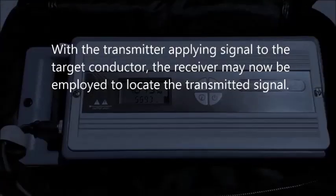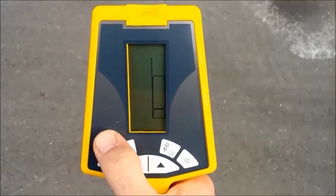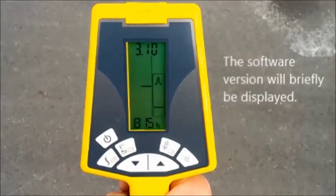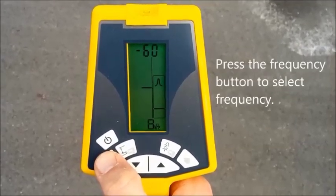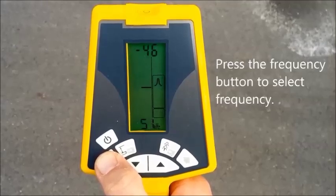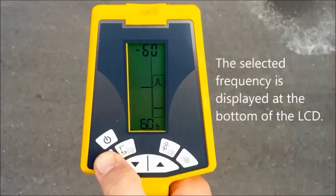Now that the transmitter has applied a signal to the target conductor, we may use the receiver to locate the path of the utility. Turn the receiver on. The software version will briefly be displayed at the top of the LCD. Press the frequency button to select the desired frequency. The selected frequency is displayed at the bottom of the LCD.